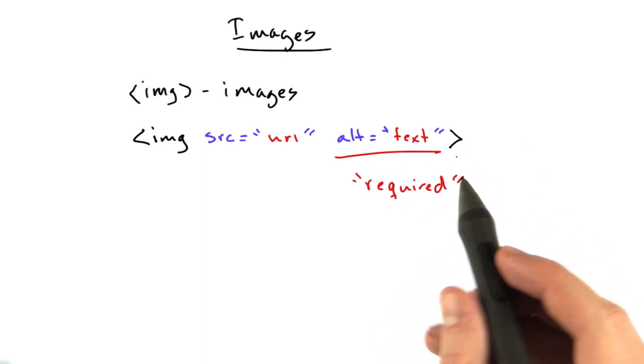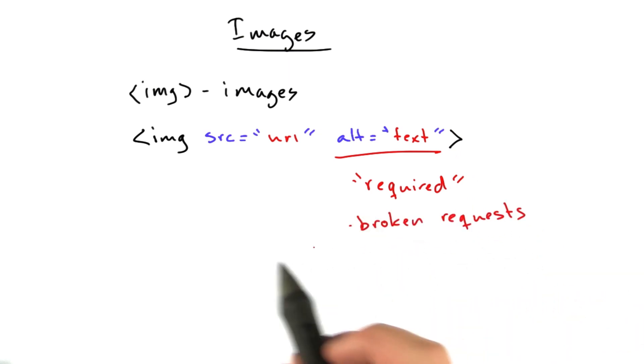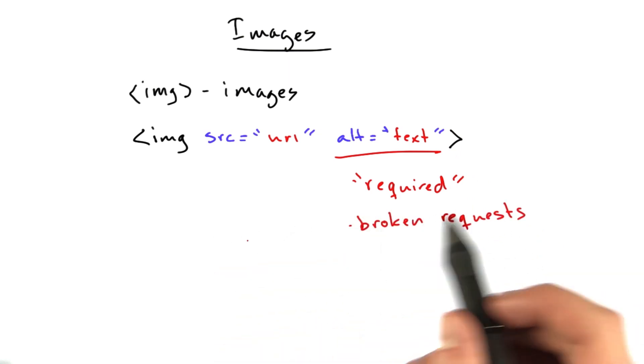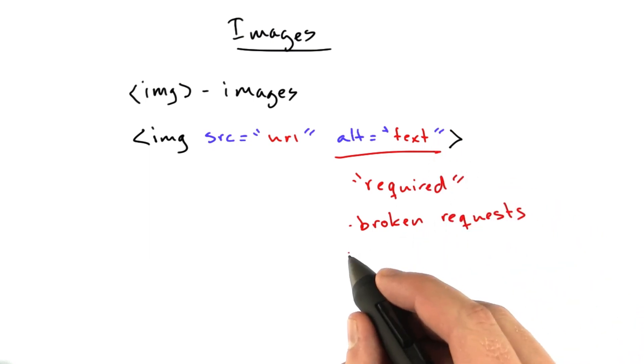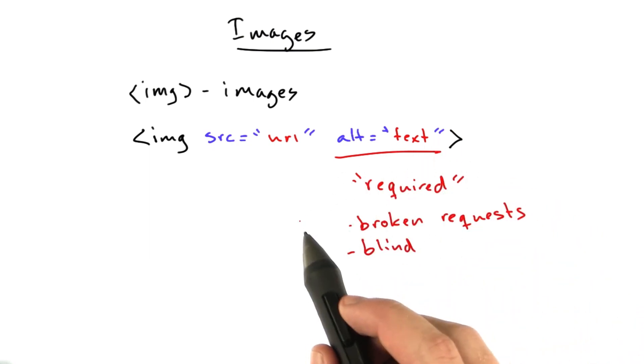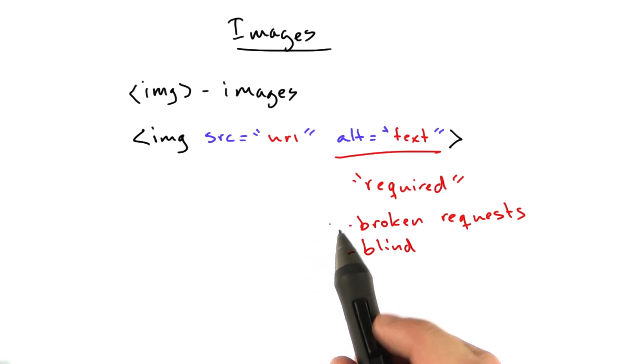but it's really nice to include it. It's for broken requests, like if our browser requests a URL that doesn't exist, this is the text that gets displayed. And it's also for blind people. It doesn't take much to add an alt text, and it'll make somebody's life or somebody's day at least mildly easier.